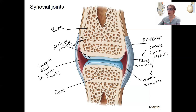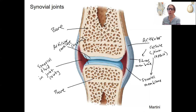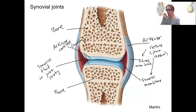This whole set of structures is supported by tendons, which connect bone to muscle — that's how the joints allow for movement — as well as ligaments, which connect bone to bone to support the joint and give it stability so that it can move without ripping apart.